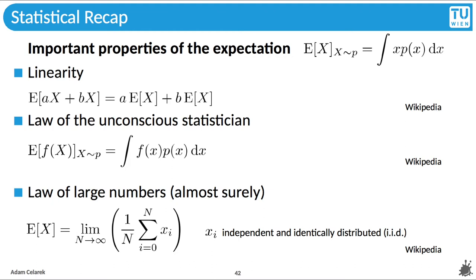Then we have the law of the unconscious statistician. Finally, we need the law of large numbers. It states that the average of observations converges almost surely towards the expectation when increasing the number of samples, and all x are independent and identically distributed, in short, iid. iid simply means that we don't do anything funny. This law is independent of the pdf of x. The pdf is only taken into account implicitly when used for taking the observations of x.